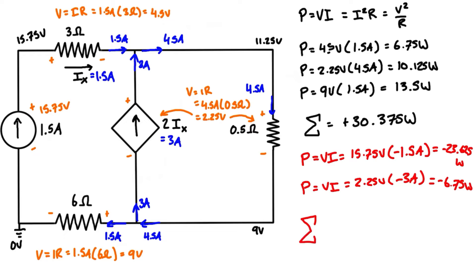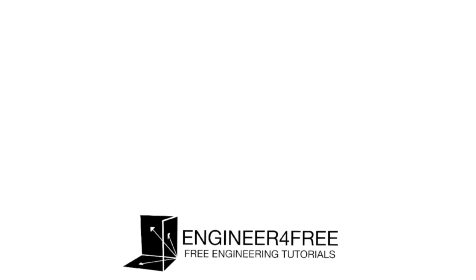Adding the two source powers together gives negative 30.375 watts total delivered. Negative indicates power being delivered and positive indicates power being dissipated. In the overall circuit, power delivered and dissipated should net out to zero — and they do. That's an example of a current-controlled current source: once you find the dependent current, just treat it like any other problem with multiple power sources. I'll see you in the next video where we'll go over another example with a different dependent power source.